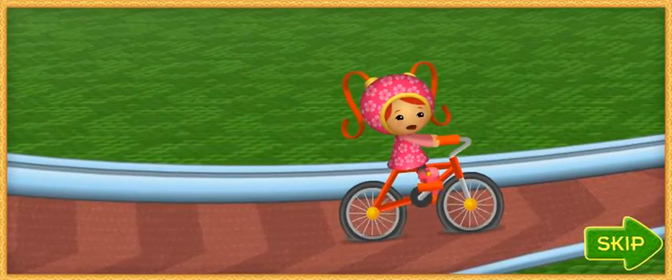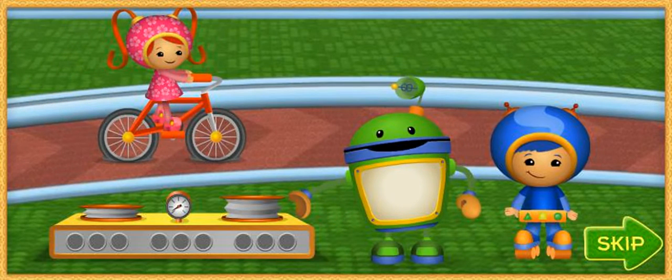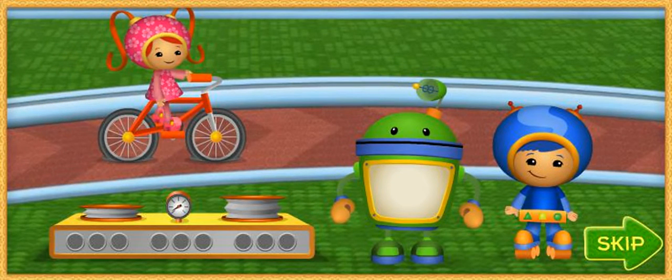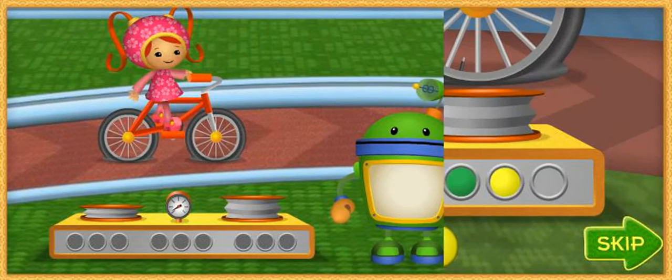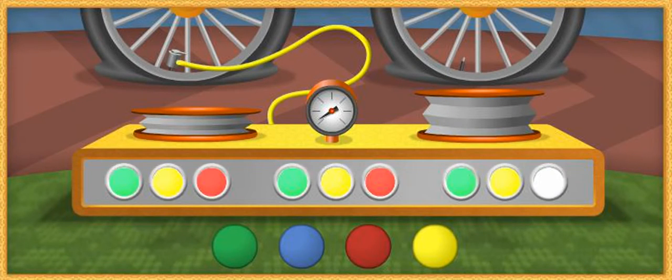Both my tires are almost flat! This tire pump can fill the bike tires. But first, we need to turn the tire pump on. Those colored lights make a pattern, but the last light isn't on. Umi friend, we can use our pattern power. Use your mouse to click on the correct light to complete the pattern. Ready?